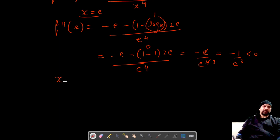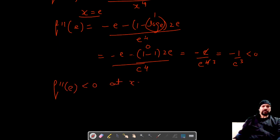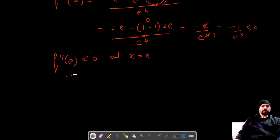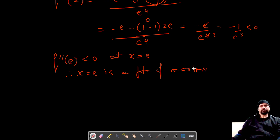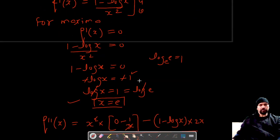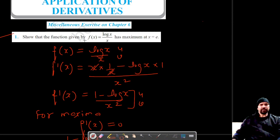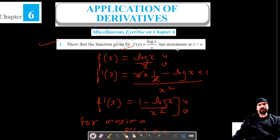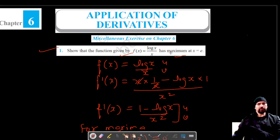Since the second order derivative at x equal to e is less than zero, therefore x is equal to e is a point of maximum. That's what was asked in the question — that f of x equals log x upon x has maximum value at x equal to e. Do like, share and subscribe. Thank you for watching.